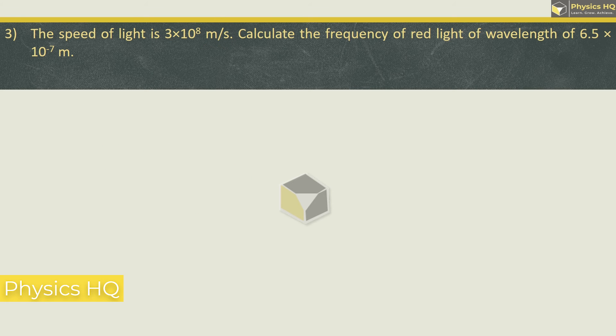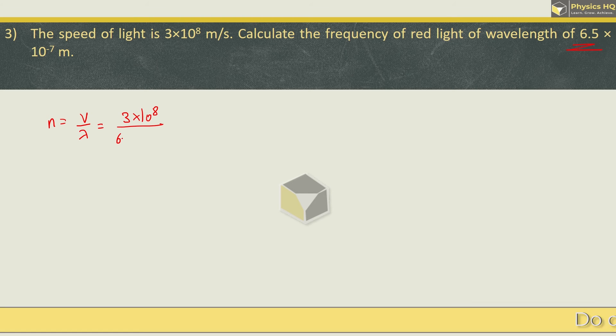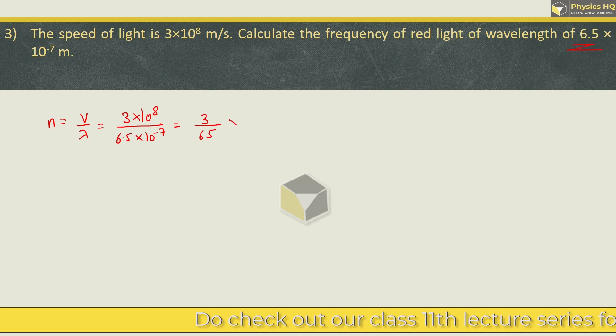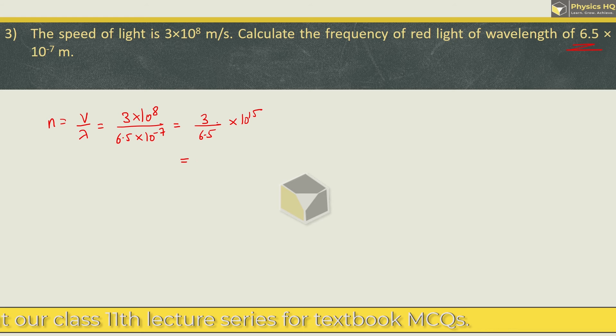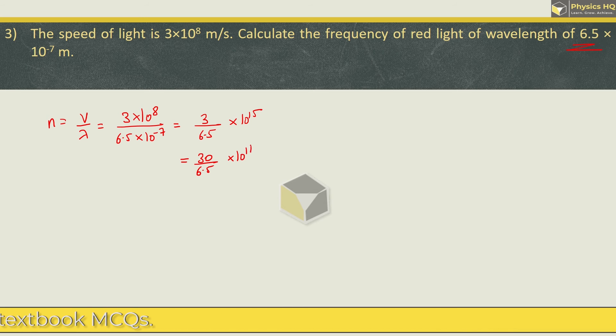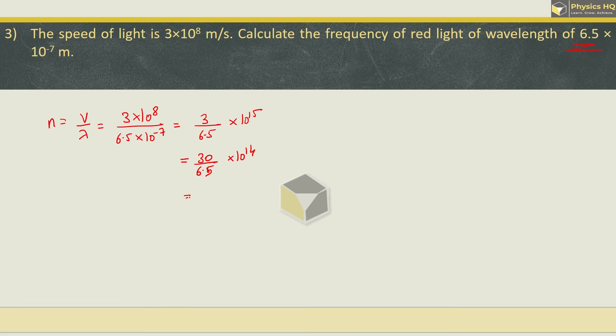Next, the speed of light is 3 into 10 raise to 8. Calculate the frequency of red light of wavelength 6.5 into 10 raise to minus 7 meter. So frequency is V by lambda. V is 3 into 10 raise to 8, lambda is 6.5 into 10 raise to minus 7. So 3 upon 6.5 into 10 raise to 15. When you solve this, you will get the answer as 4.6 into 10 raise to 14 hertz.